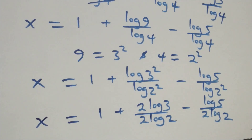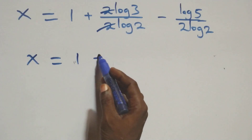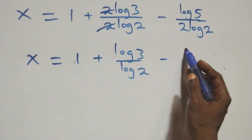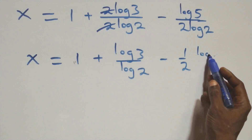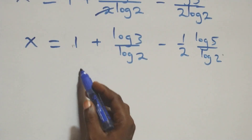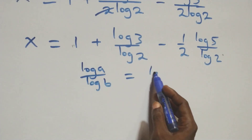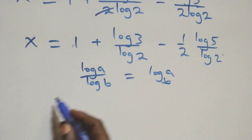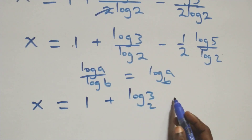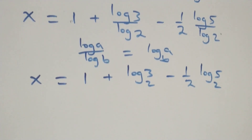The 2s cancel each other, giving x equals 1 plus log 3 over log 2, minus log 5 over 2 log 2. When we apply the change of base formula — when we have log a over log b, this is the same thing as log a to base b — what we have becomes x equals 1 plus log₂3, minus log₂5 over 2.